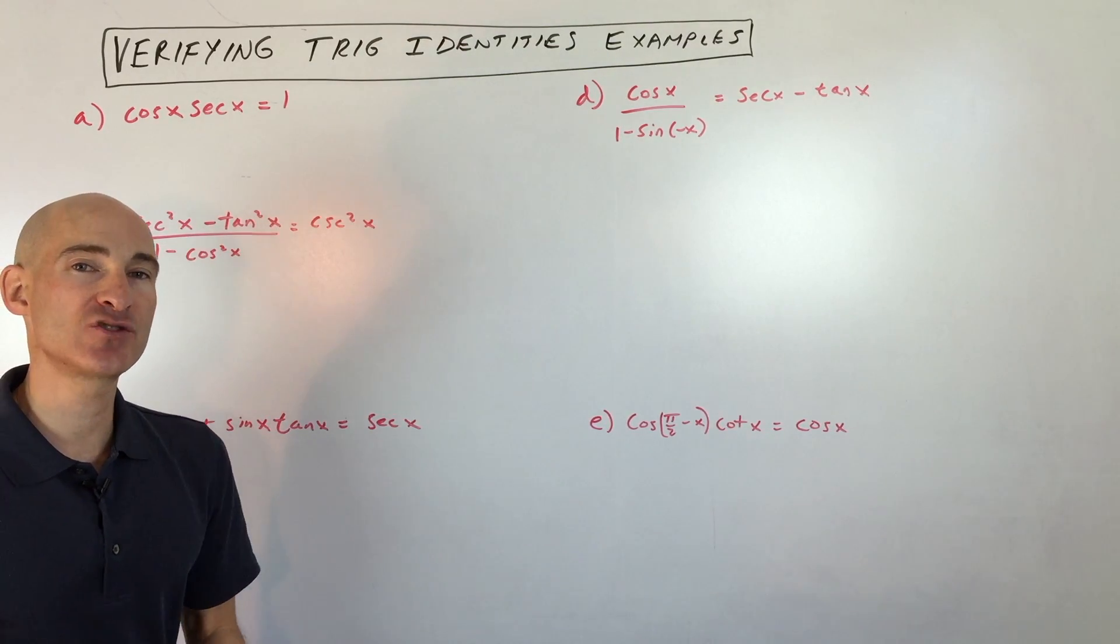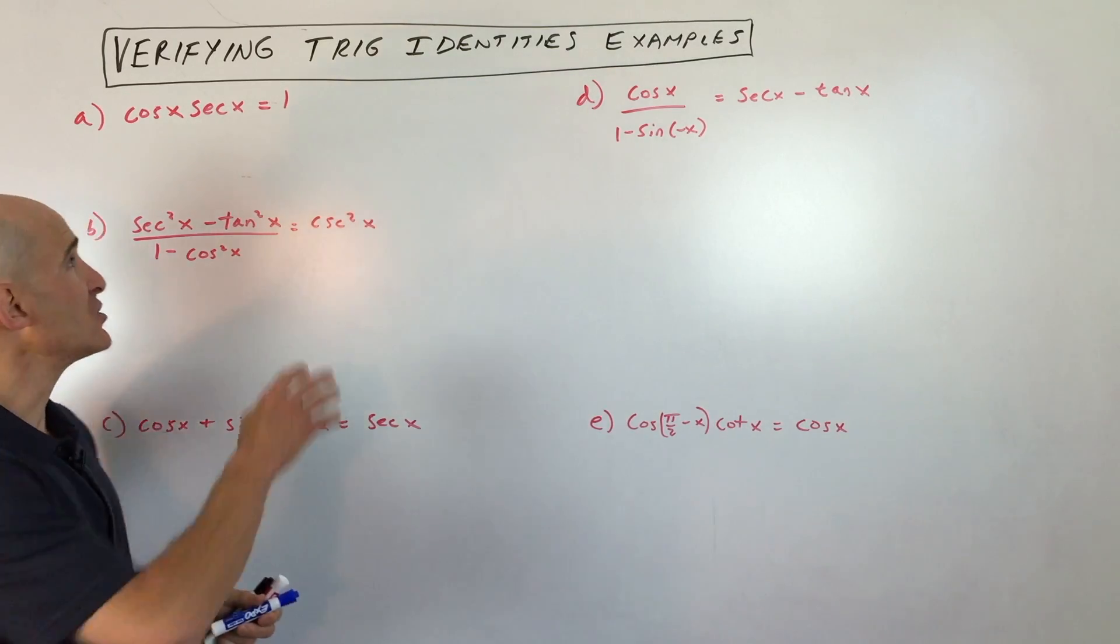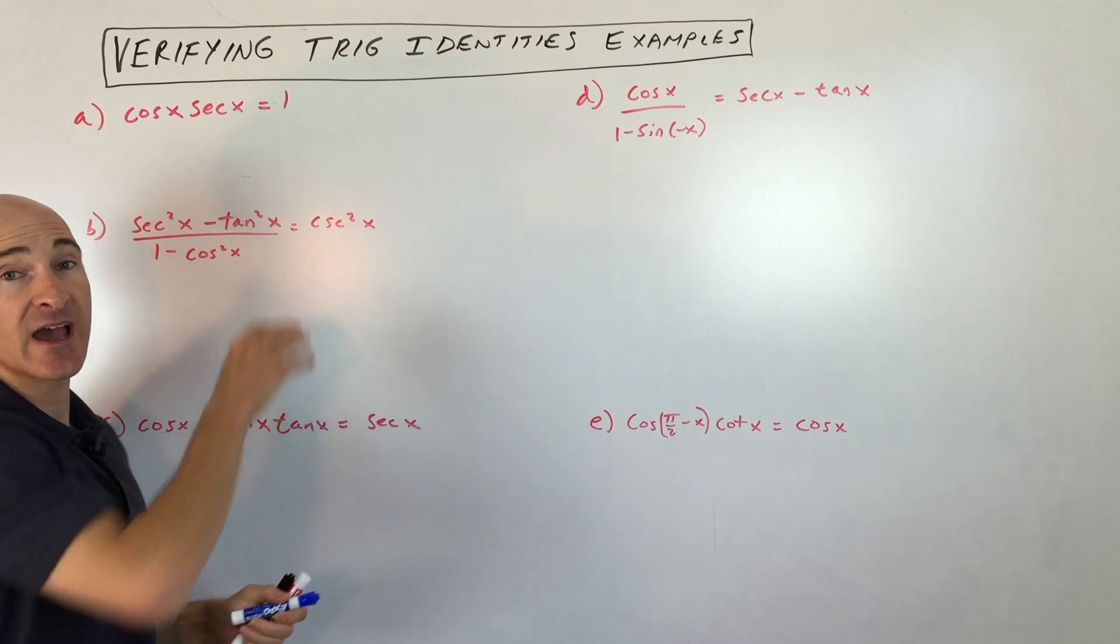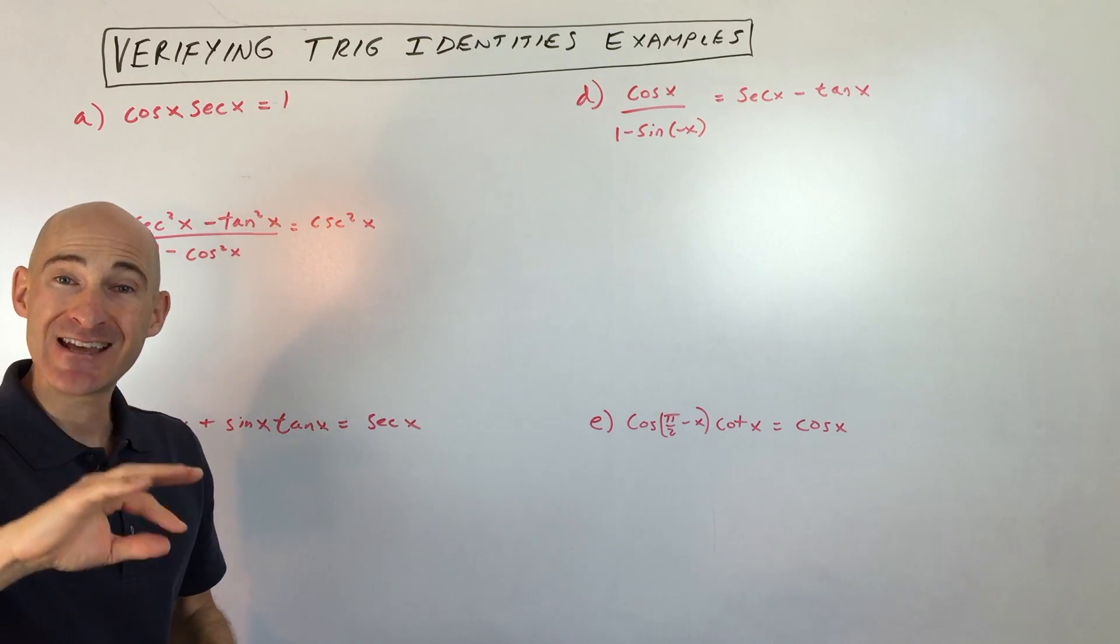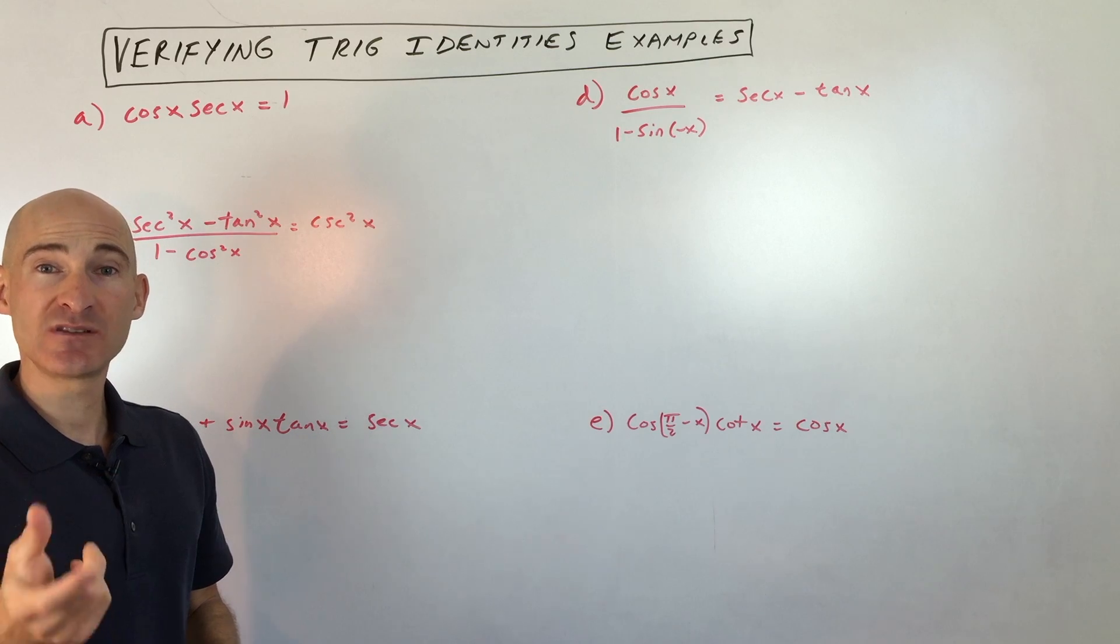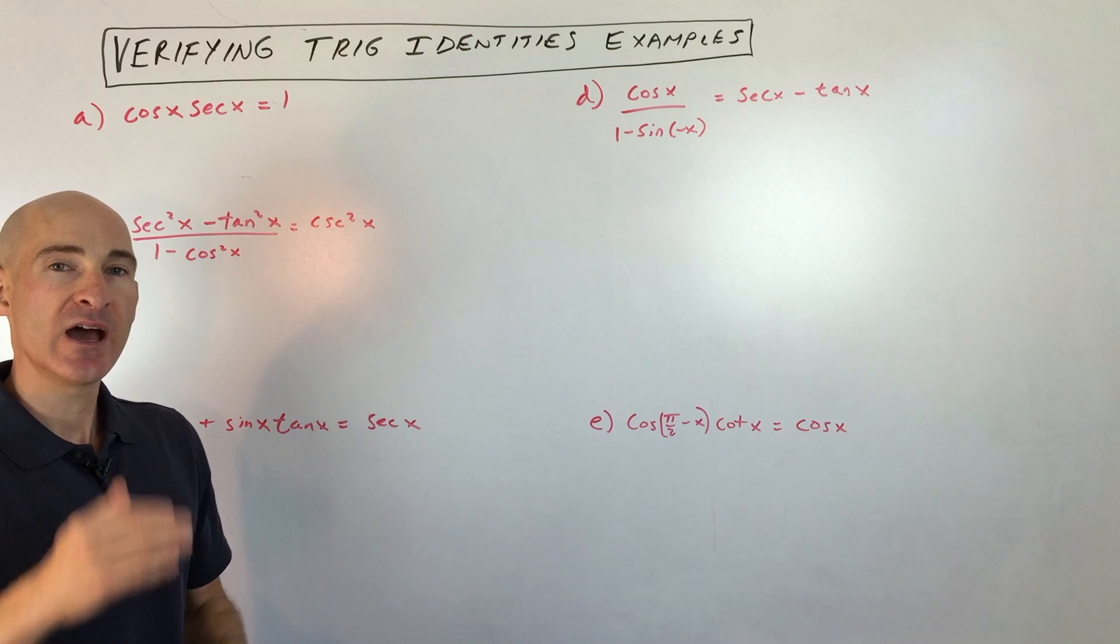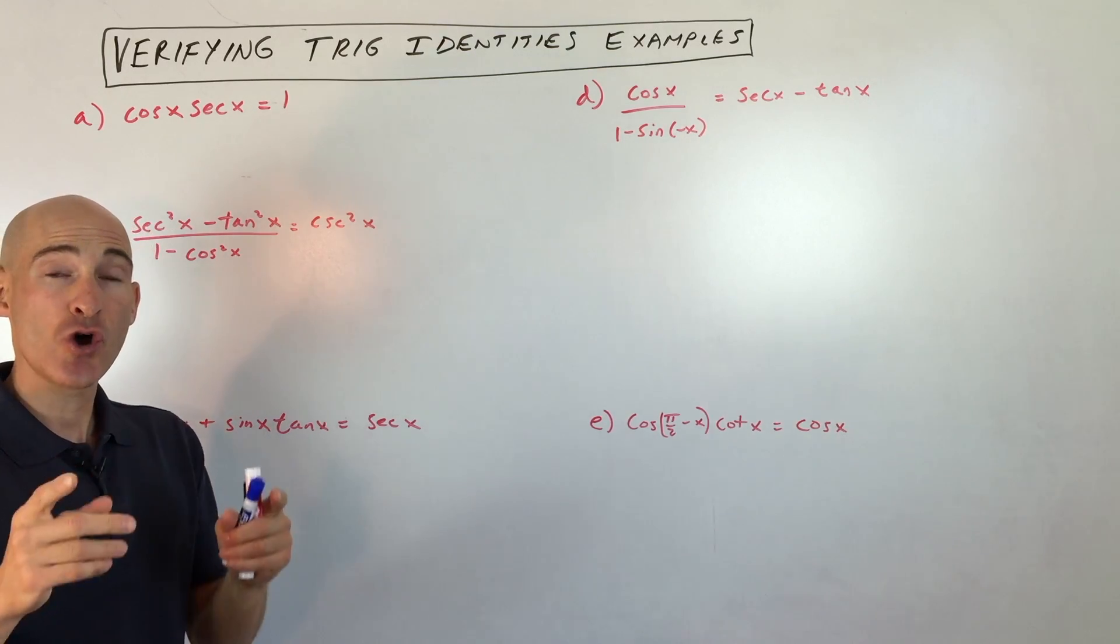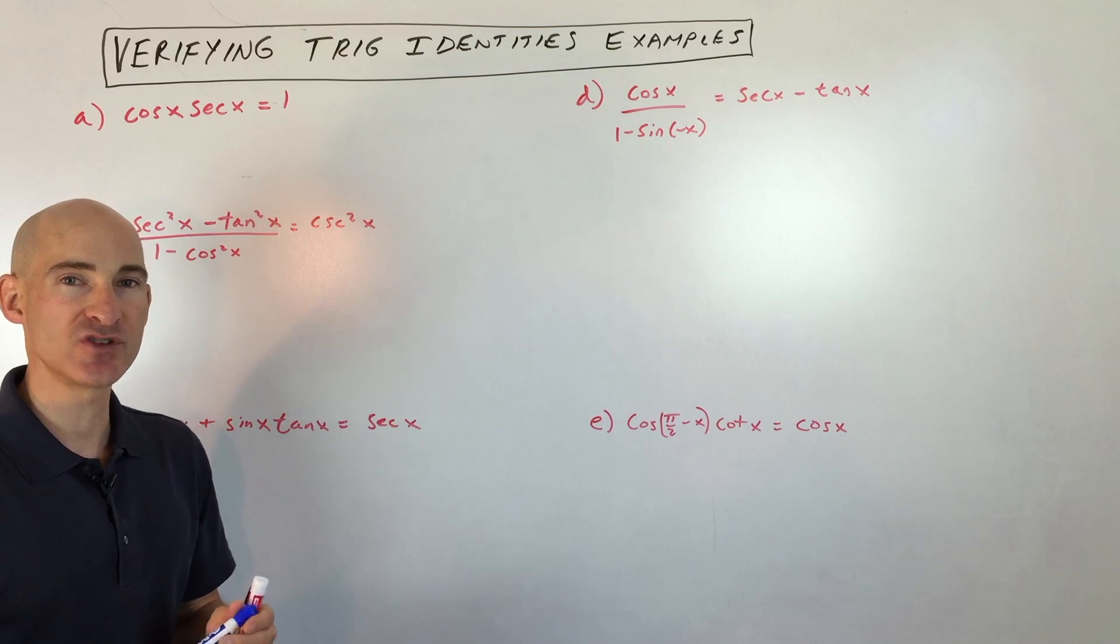Now what you want to do when you're verifying trig identities, ideally, is you just want to work with one side of the equation, either the left side or the right side, and leave the other side alone. You just want to do identical substitutions. So identities mean that they're identical. You can substitute identical quantities and simplify it until you can show that both sides are equivalent. I'll show you what I mean in these examples and you'll get a better idea.